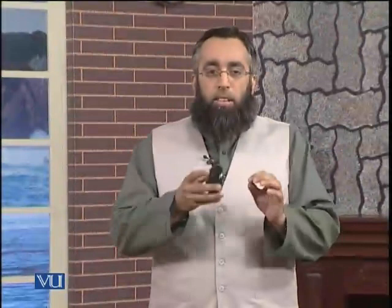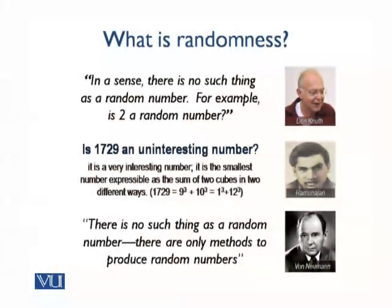We can conclude that we cannot really associate randomness to a single number just by looking at it. If we have to define randomness by looking at a number, we cannot say if it was created by a random or deterministic source. The famous American polymath who created the architecture used in modern computer systems and also had a big part in the creation of the Monte Carlo method said: there is no such thing as a random number — there are only methods to produce random numbers.